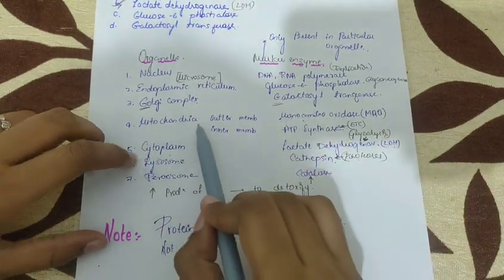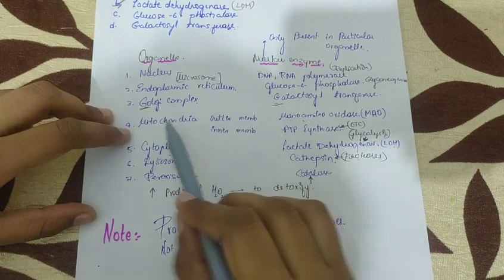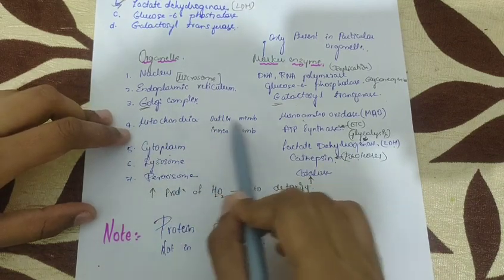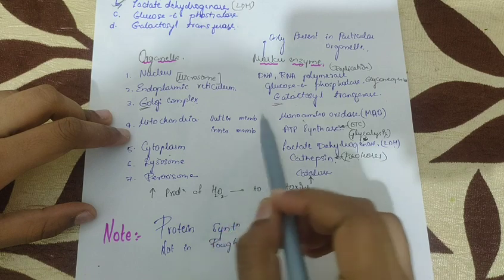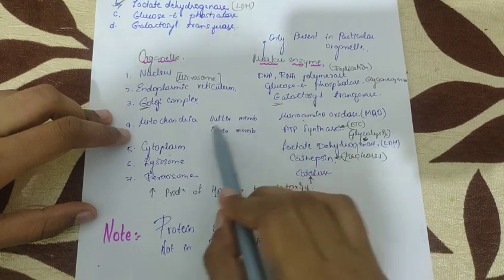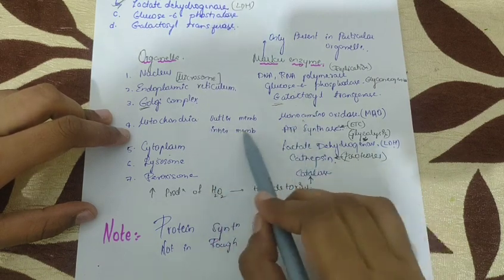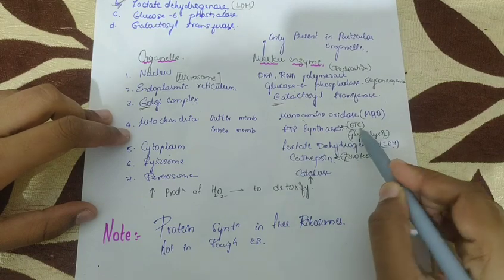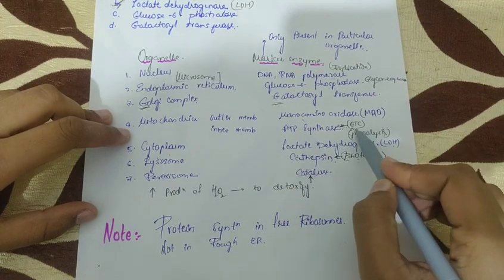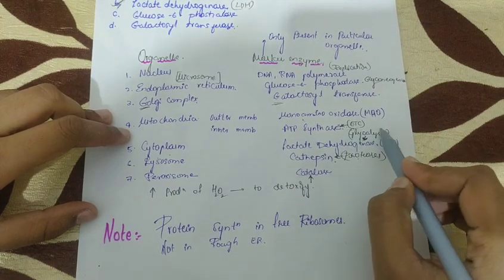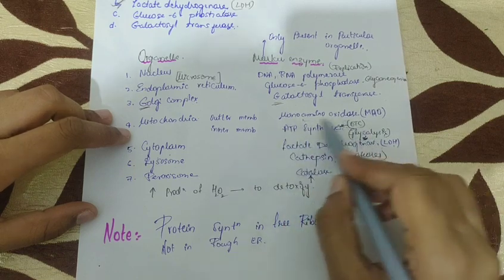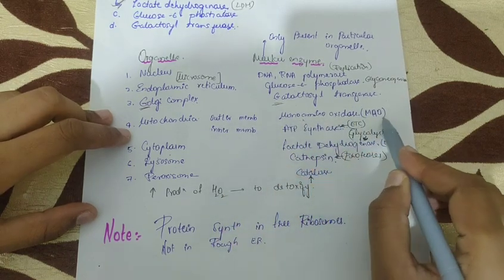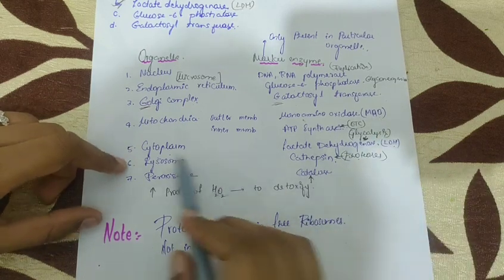For mitochondria, there are two membranes — the mitochondria is a double membrane organelle with an outer membrane and an inner membrane. For the inner membrane, the electron transport chain (ETC) takes place, which converts NADH and FADH2 into ATP. So ATP synthase is the marker enzyme for the inner membrane. For the outer membrane, monoamine oxidase (MAO) is the marker enzyme.